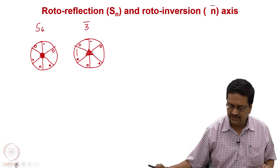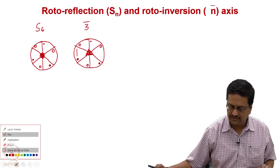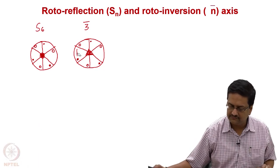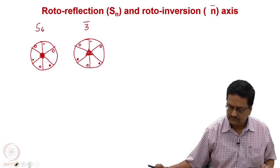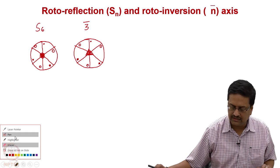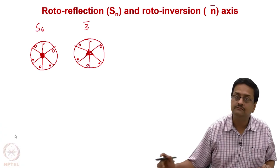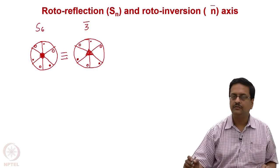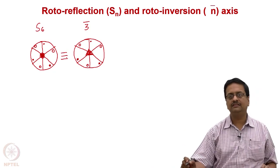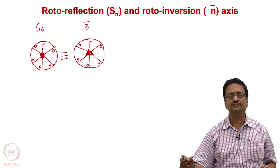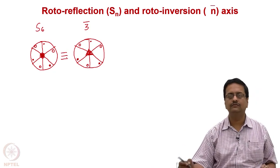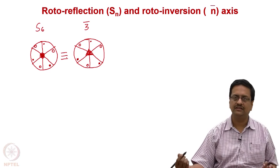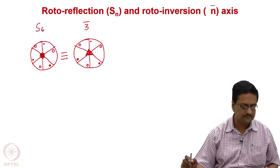What we can see in these two figures is that they are one and the same — meaning molecular symmetry S6 is equivalent to crystallographic symmetry 3-bar.